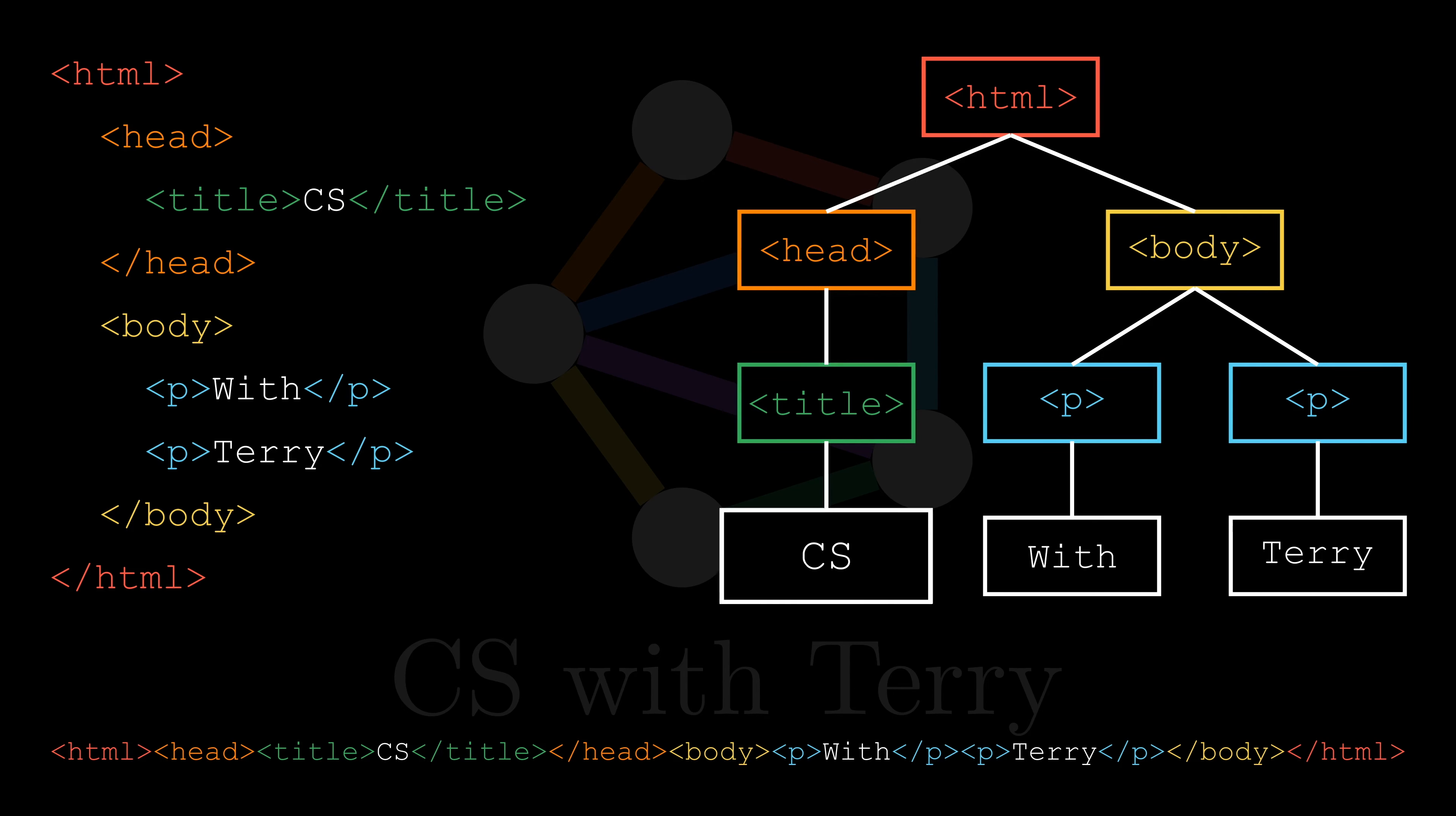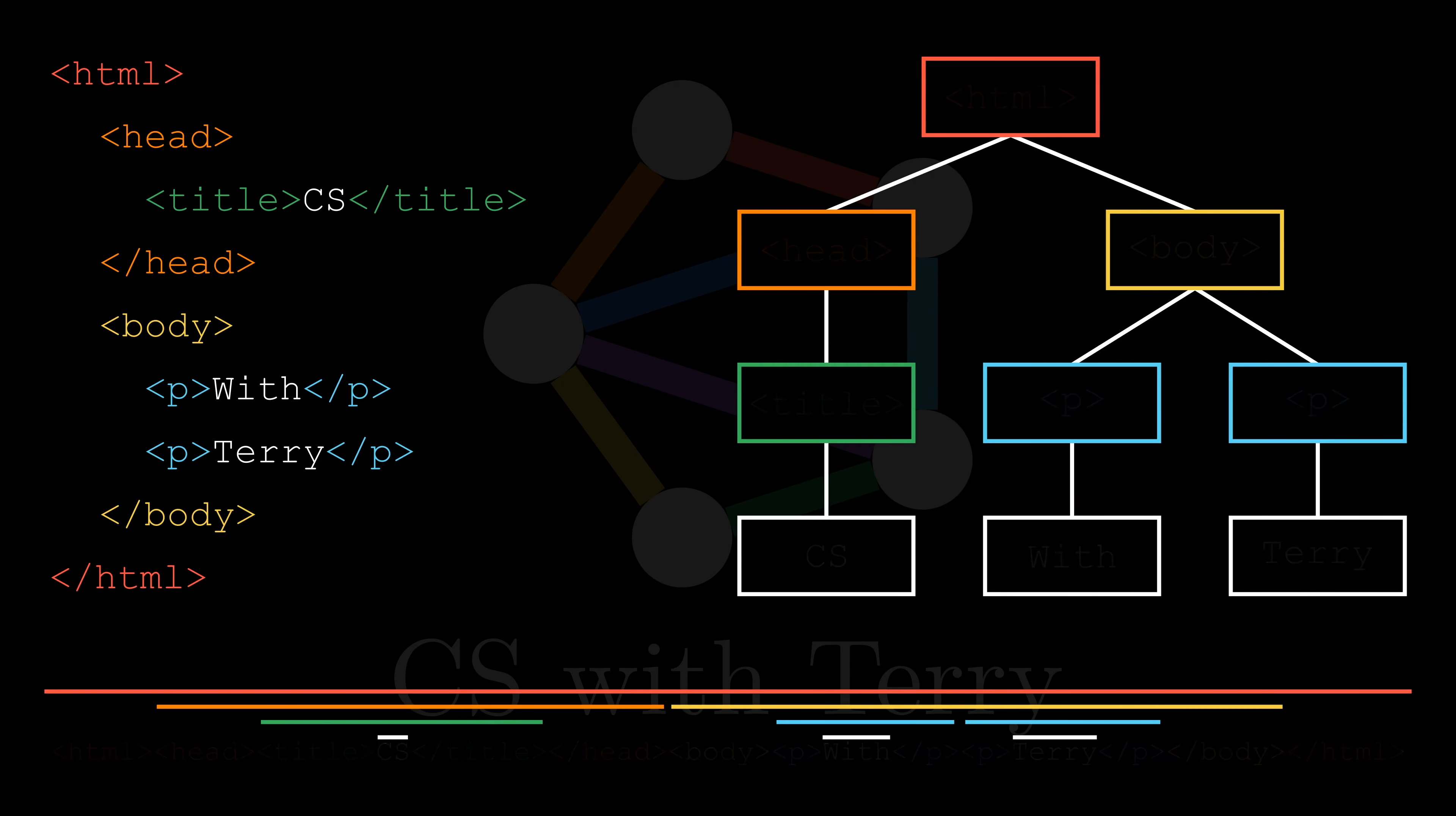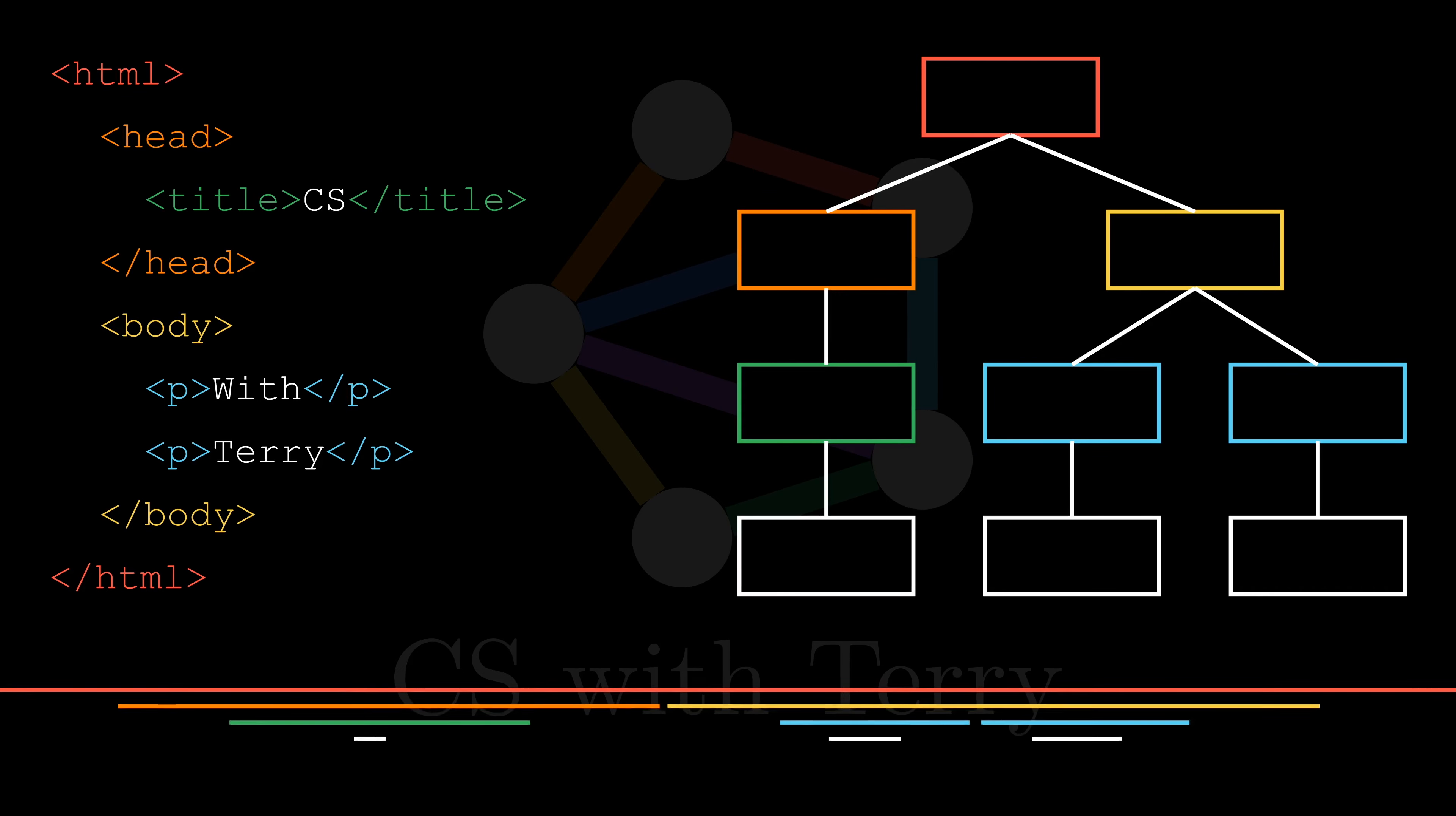We can see that a node in HTML is a substring in this long string. Let's use line segments to indicate the start and end positions of this substring. As you can see, if you put all the segments together, they form a set of nested segments. In conclusion, we can represent HTML either as a tree or as a set of nested line segments, which confirms our previous conclusion that rooted tree is equivalent to nested line segments.